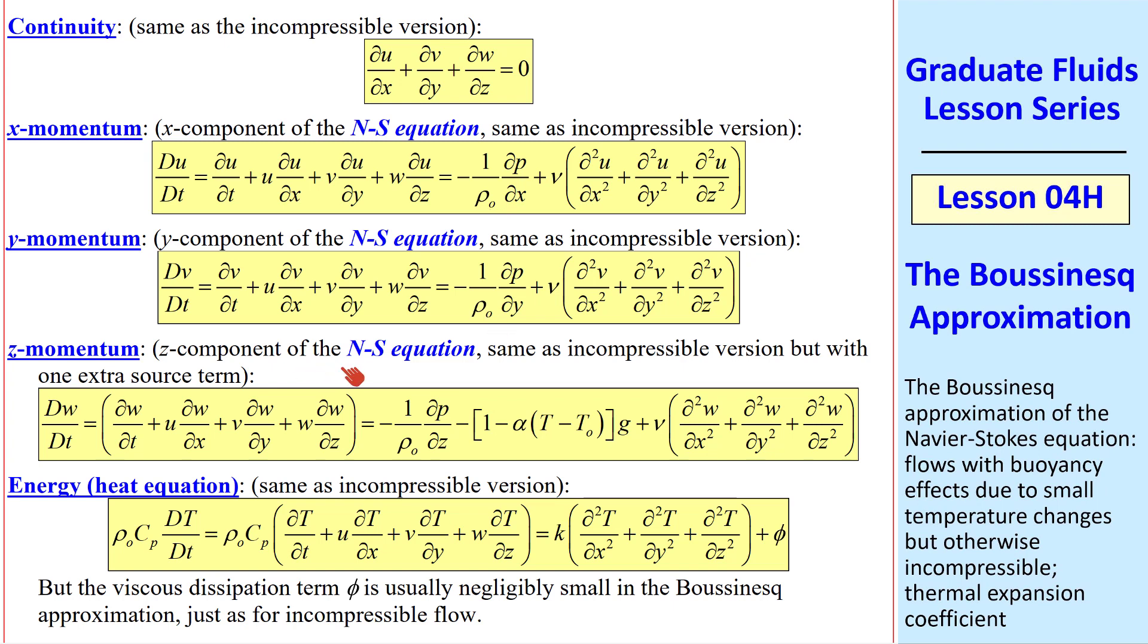Same with y-momentum. But the z component of the Navier-Stokes equation includes the gravity term, and this is our expression for the non-constant density. Notice that we use constant density in the pressure term and constant nu in the viscous terms. Only in the gravity term do we use the variable density, and we use the linear Boussinesq approximation.